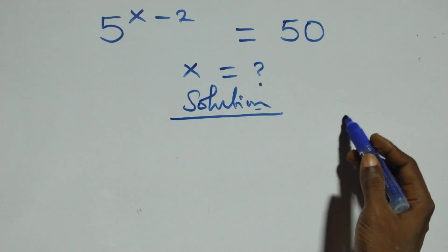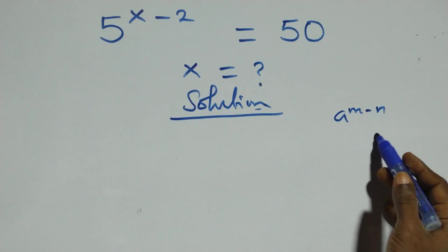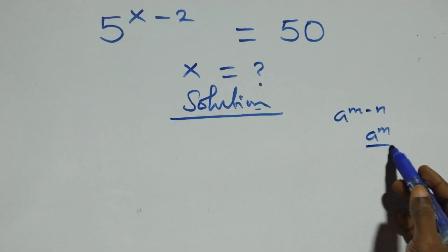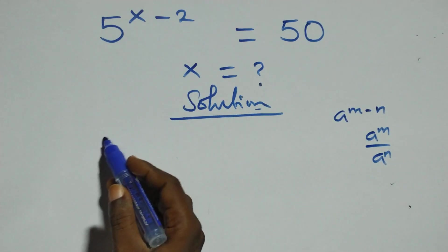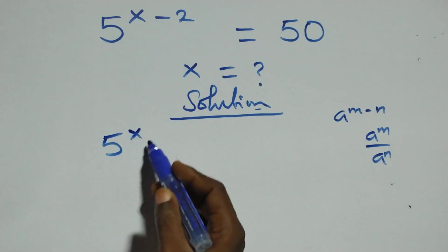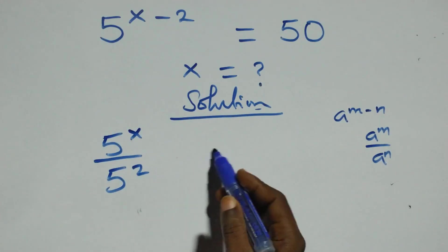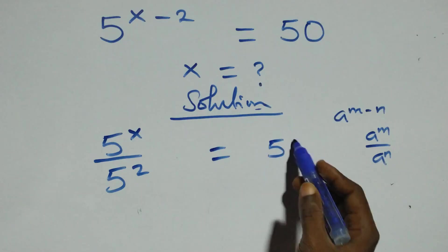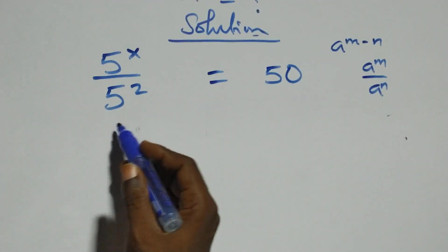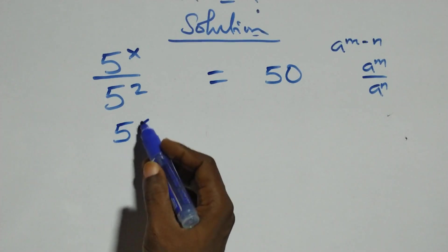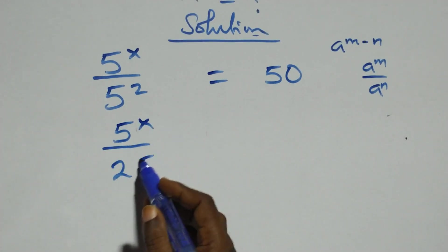This follows when we have a raised to power n minus m, which is the same thing as a raised to power n over a raised to power m. So here we have 5 raised to power x over 5 squared equals to 50. This is the same as 5 raised to power x over 25.